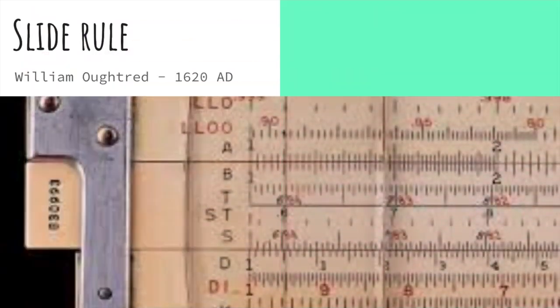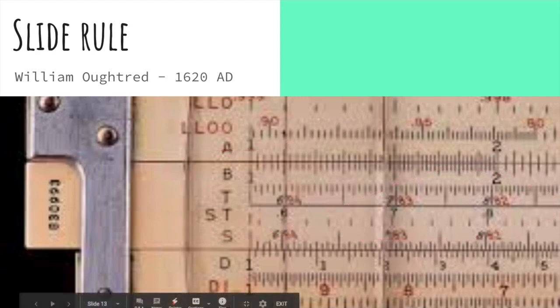Let's see the next one known as slide rule. Slide rule was developed by William Oughtred in 1620 AD. This is how a slide rule looks like. You can see there are three bars. This one is one bar and this one is another bar and this one is another bar. There are three bars in a slide rule.